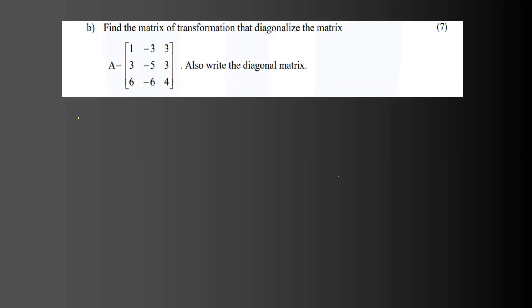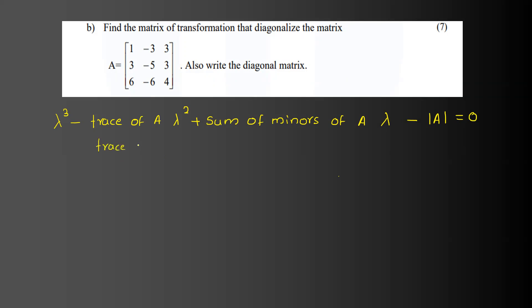Now we have the characteristic equation. We use the symbolic formula for a 3×3 matrix: lambda cubed minus trace(A) times lambda squared plus sum of minors of diagonal elements times lambda minus determinant of A equals 0. The trace of A is the sum of diagonal elements: 1 plus (-5) plus 4 equals 0. So trace of A equals 0.